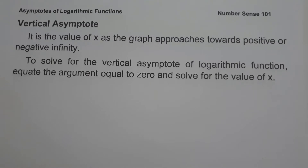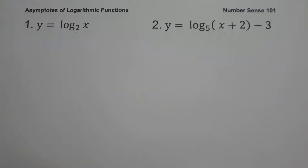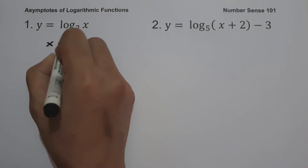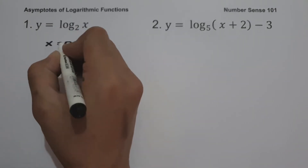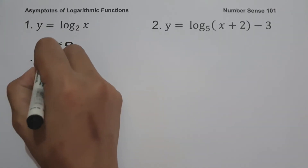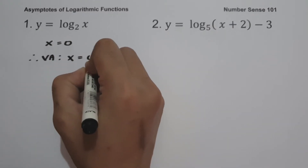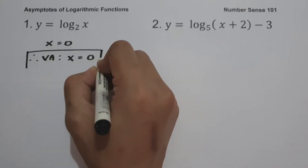Let's start with example number one: y equals log base 2 of x. To solve for the vertical asymptote, let us simply equate the argument equal to zero. So we have x equal to zero. Therefore, our vertical asymptote is x equals zero, and this will be our answer.